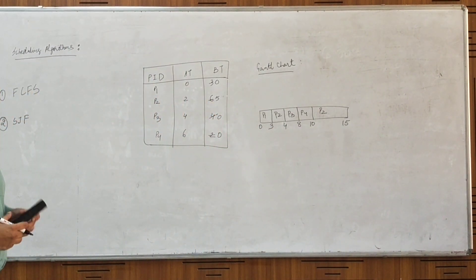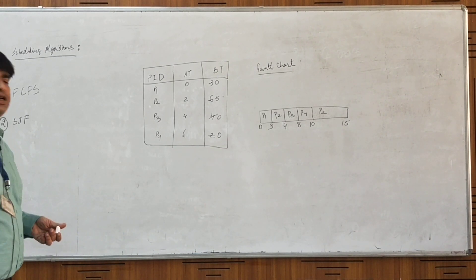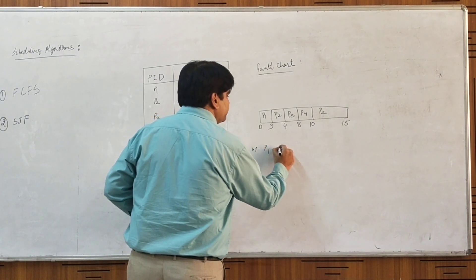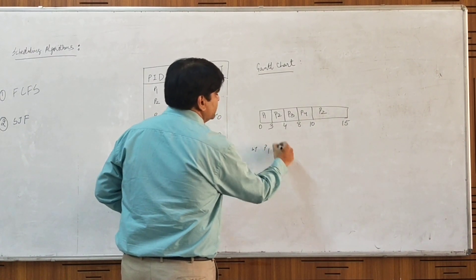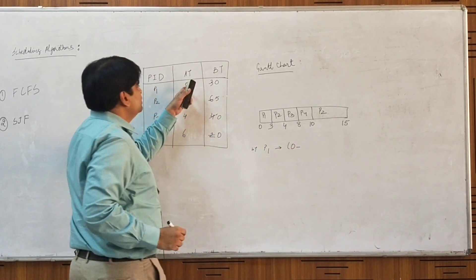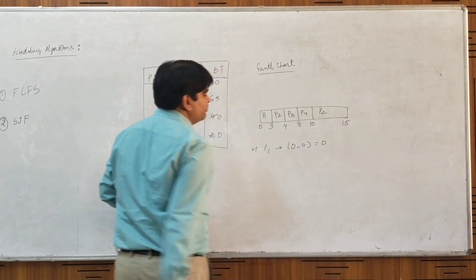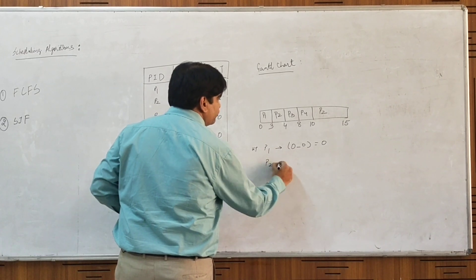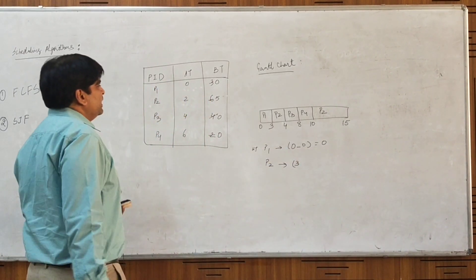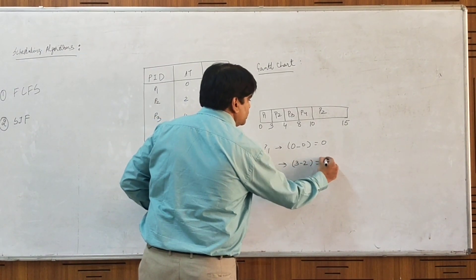SJF can also be implemented as a non-preemptive algorithm, but then it will lose its advantage. Calculating the waiting time: P1 started execution at t=0 and requested CPU at t=0, so it waited 0 seconds. For P2, it started execution at t=3 and made the request at t=2, so 3 minus 2 is 1 second of initial waiting.